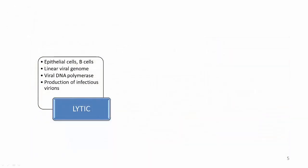The lytic cycle results in the production of infectious virions. EBV can undergo lytic replication in both epithelial cells and B cells. In epithelial cells, lytic replication directly follows viral entry. In B cells, however, lytic replication usually takes place after reactivation from latency. For lytic replication to occur, the viral genome must be linear. The latent EBV genome is circular, so it must linearize in the process of lytic reactivation.